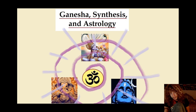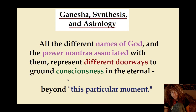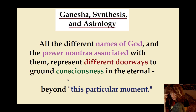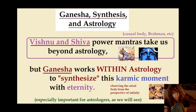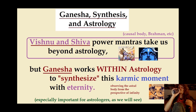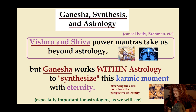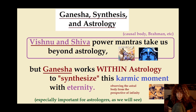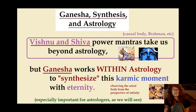Vishnu kind of does it through love. Shiva kind of does it through absoluteness, and Ganesha is kind of a combination of those two. All the different names of God in the power mantras associated with them represent different doorways to ground consciousness in the eternal — circuit breakers back to the infinite, beyond this particular moment and through this particular moment. Vishnu and Shiva, their power mantras take us beyond astrology, into the causal body, Brahman, Atman. But Ganesha works within astrology to synthesize this karmic moment with eternity. Ganesha is observing the astral body from the perspective of infinity, from the perspective of Vishnu and Shiva.